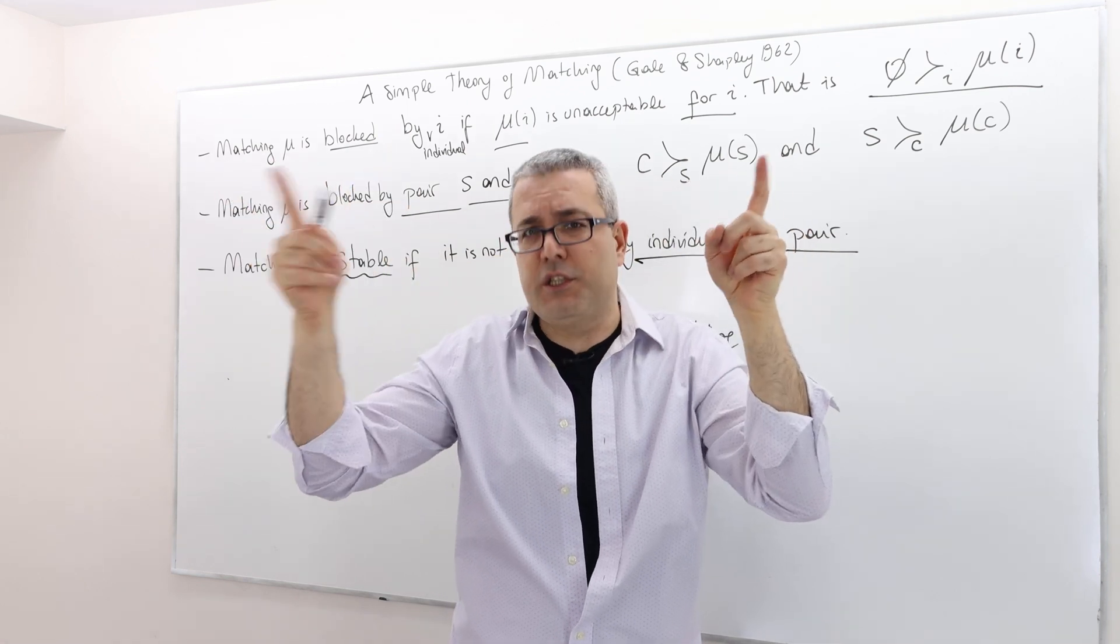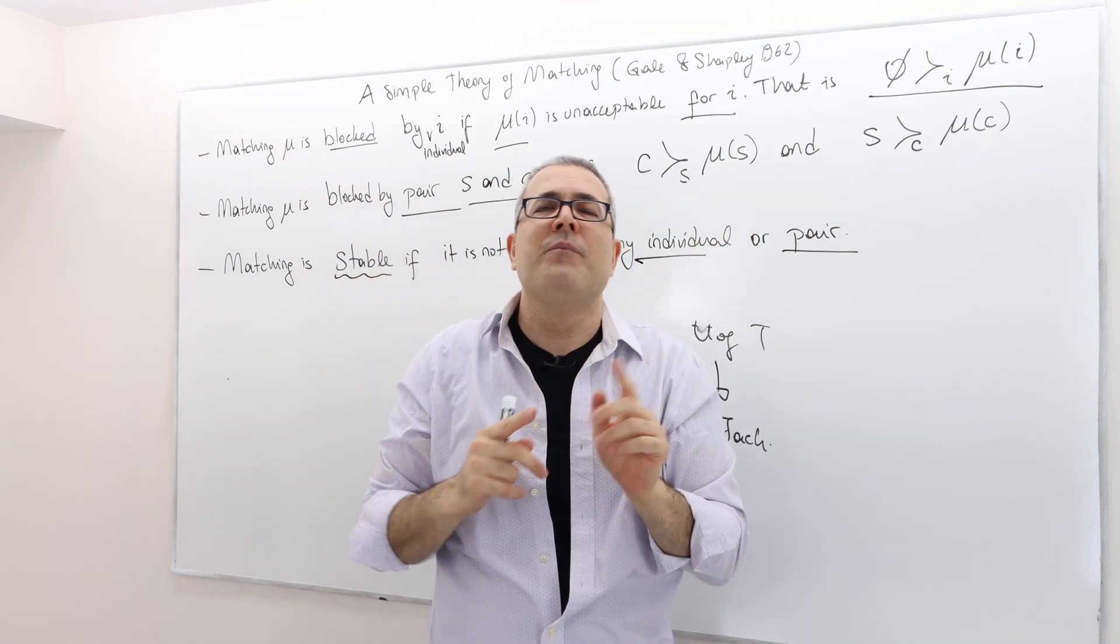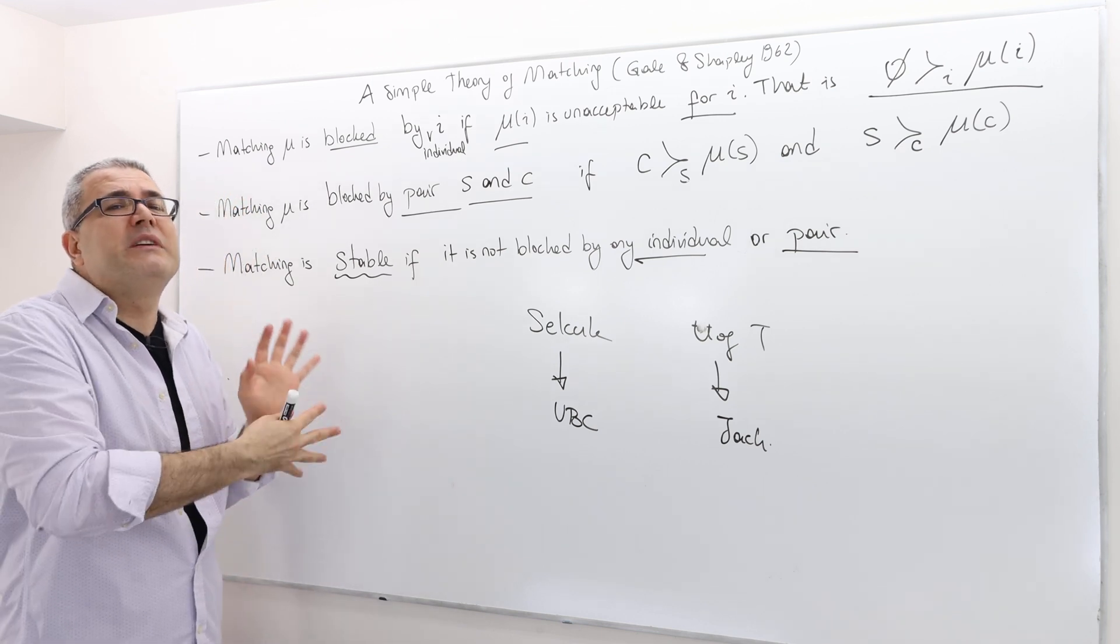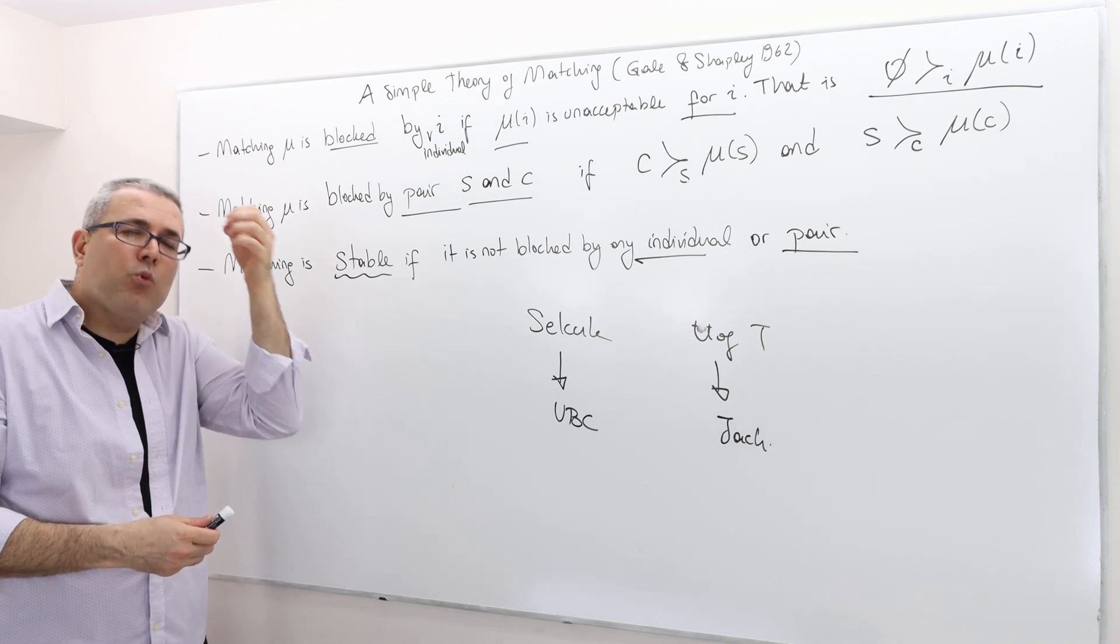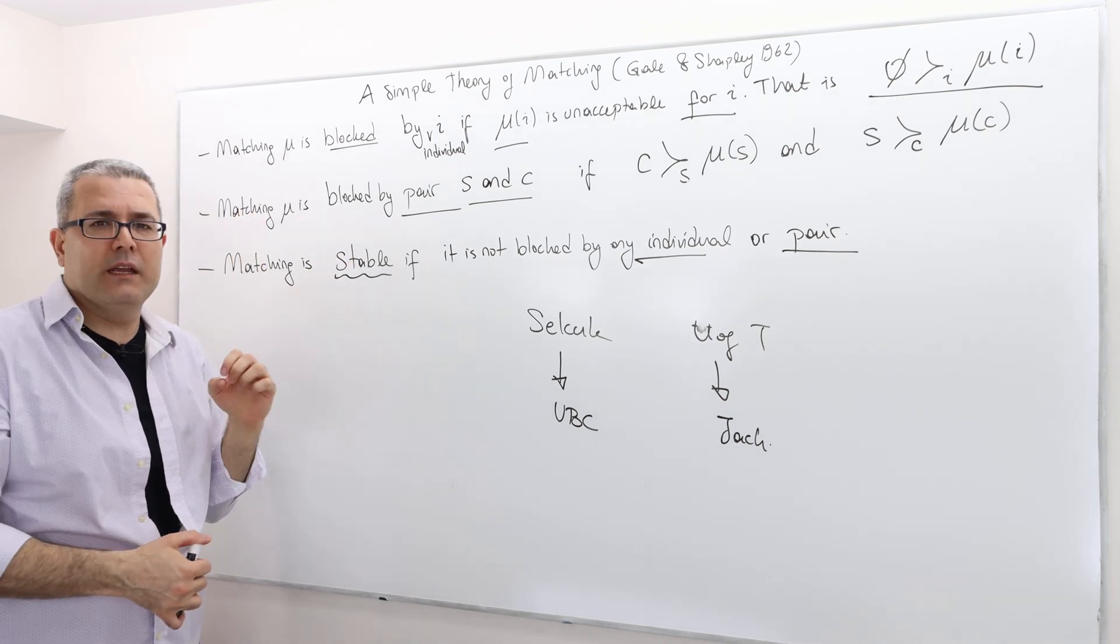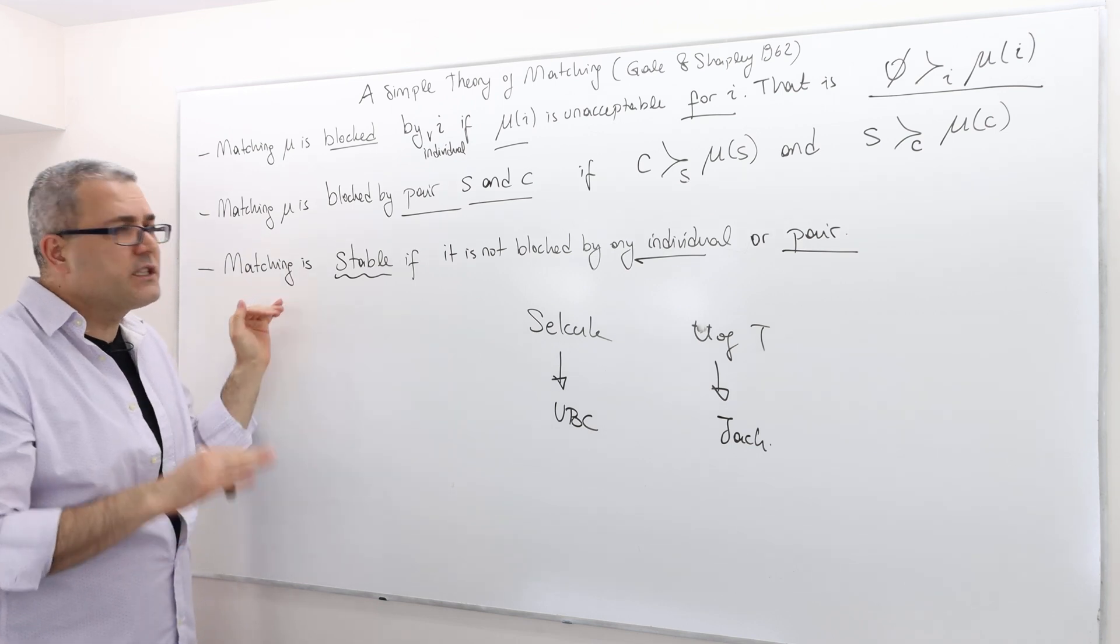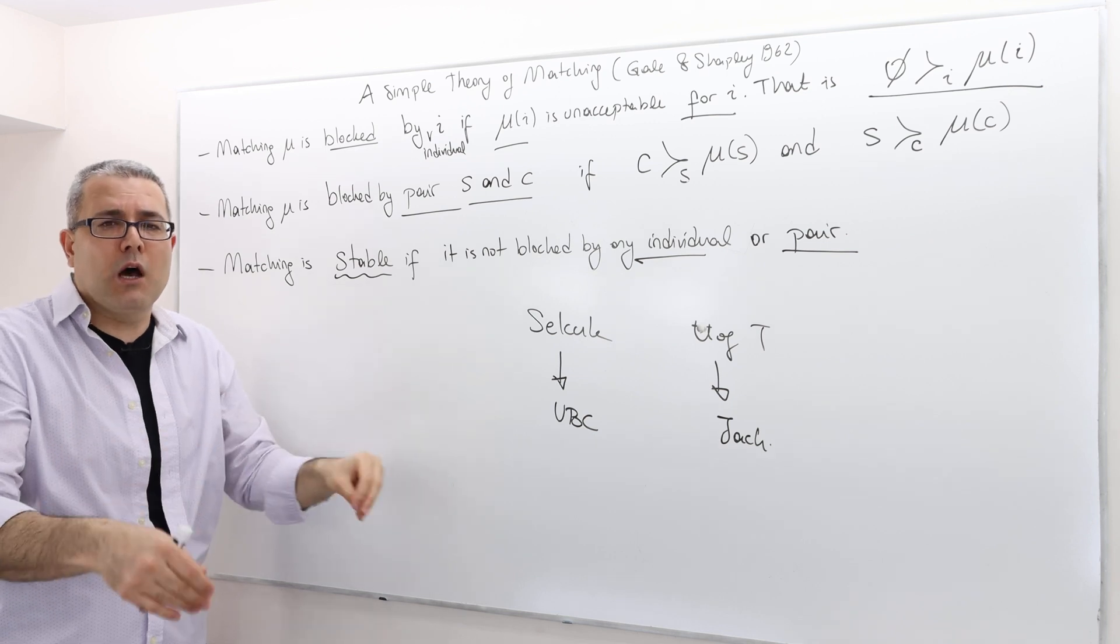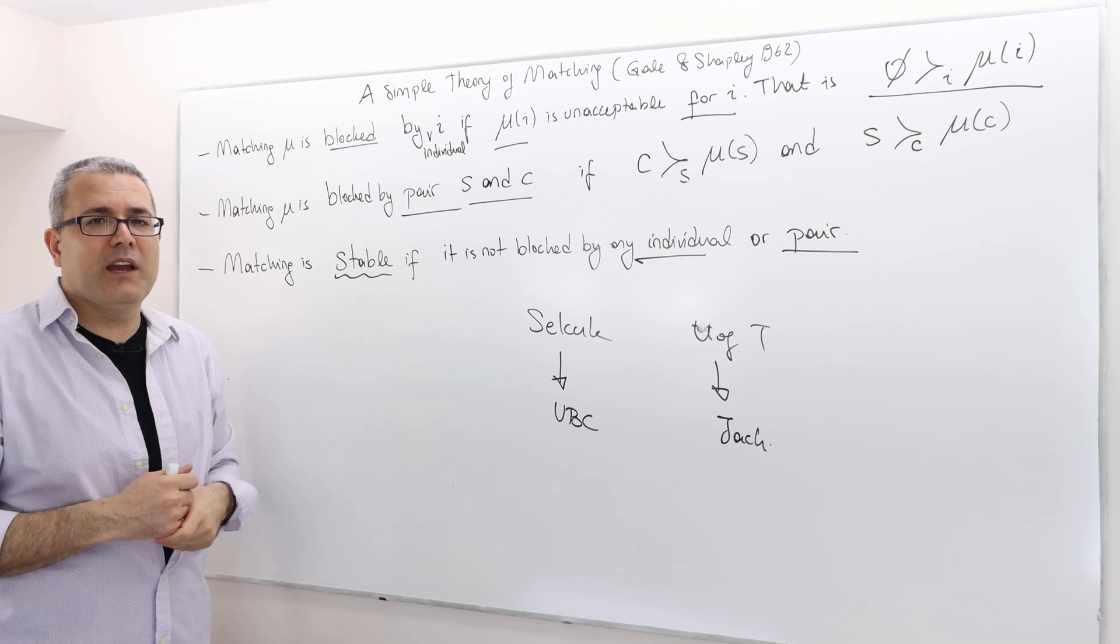One university, one student, remember? Or one college, one student. And so, for that reason, it makes more sense in this particular framework, in the matching framework, that we use a weaker form of stability. But this is what we mean by a stable match. There is no individual or pair that will block the matching. If this is the case, then the matching is called stable.